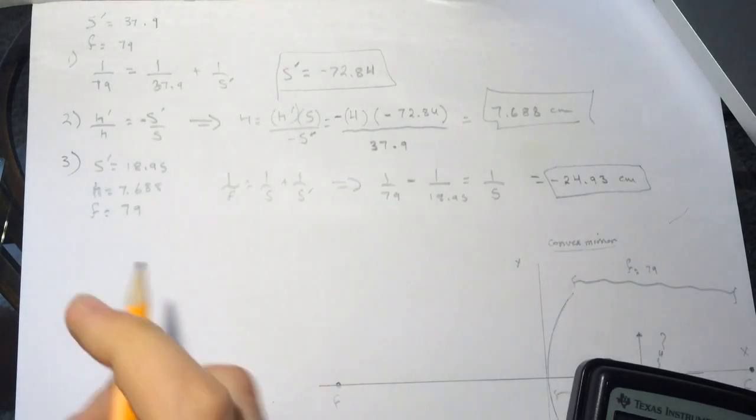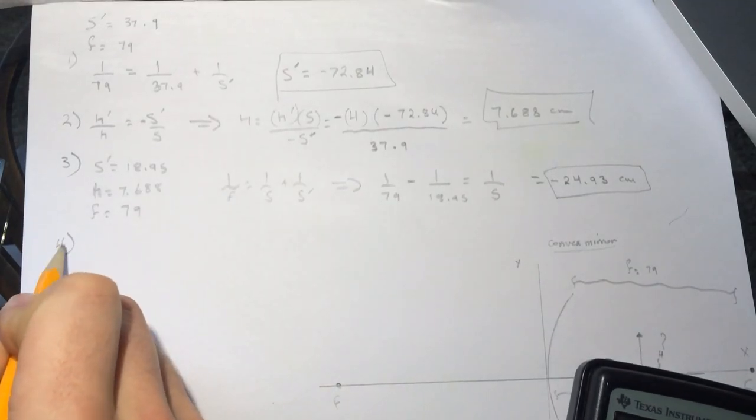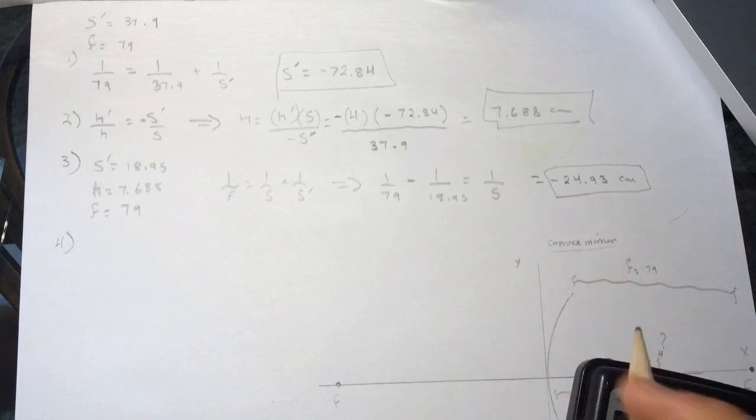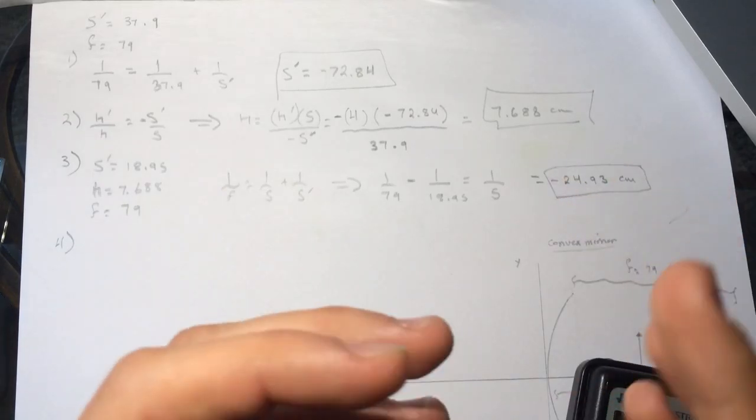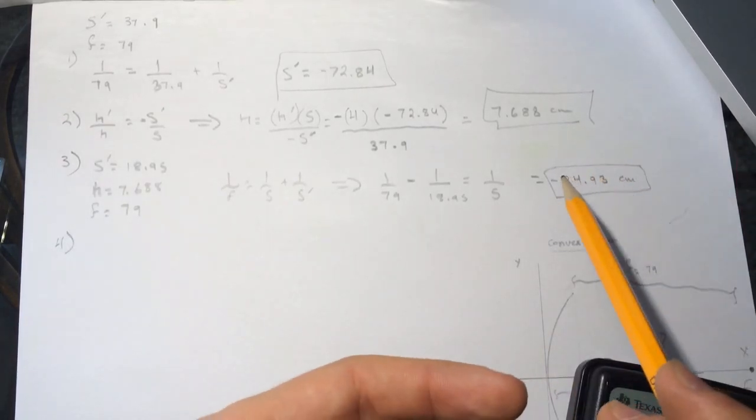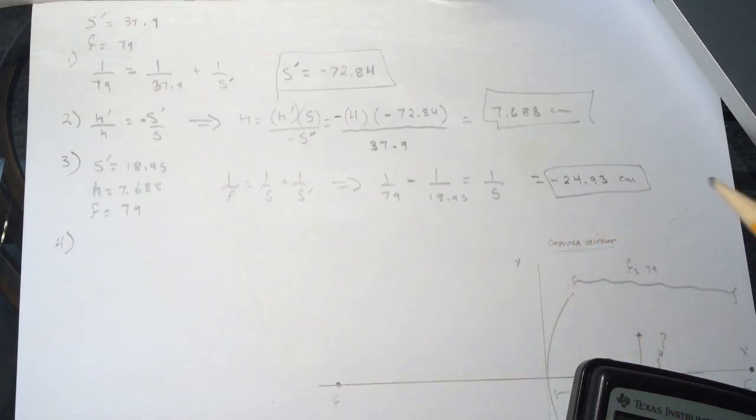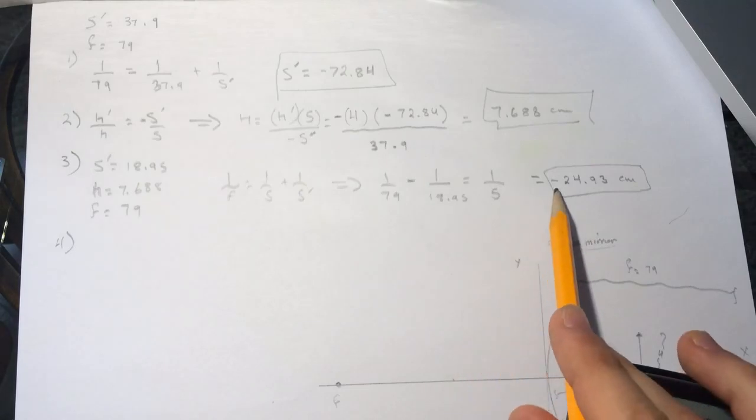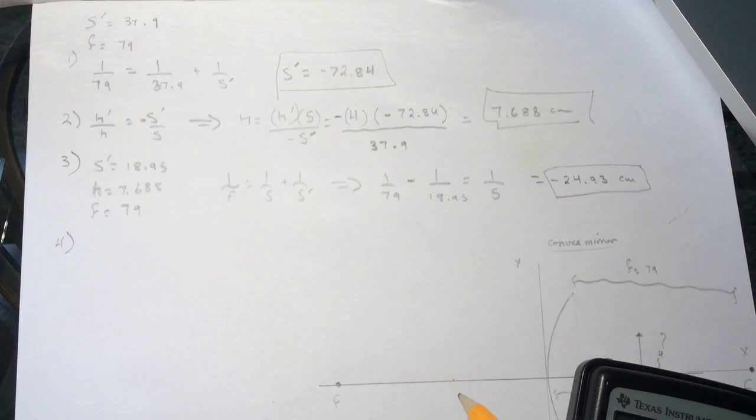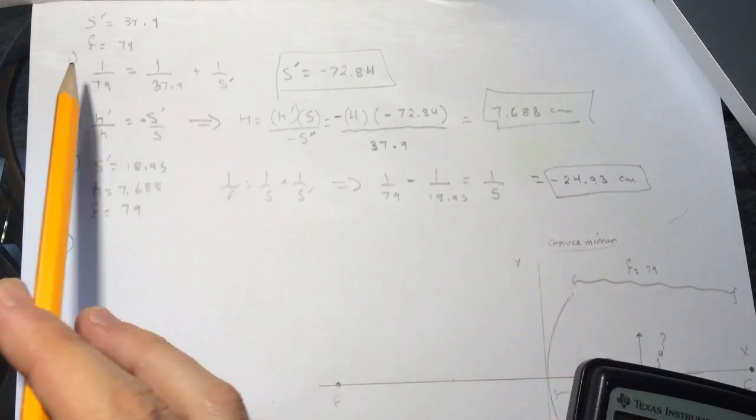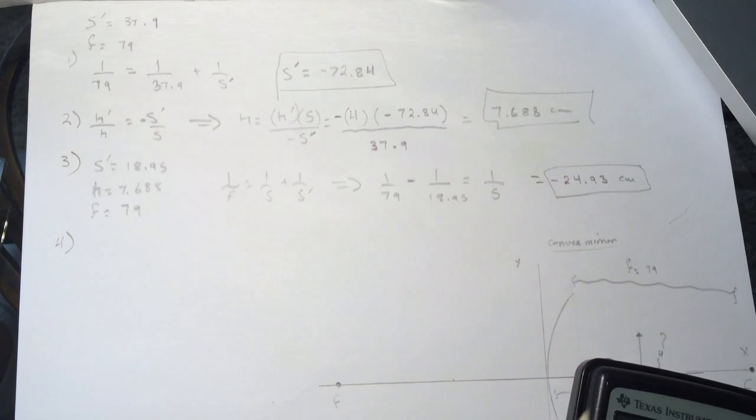So 79 minus 18.95 like this. So it's negative 24.93 cm. All right. So here we're looking at the exact position of it. So here they gave us that's negative 24.93. So negative 24.93. And it's negative, it's just the position of it. Maybe you're going to wonder why the focal point here is not negative, but I'm just using the exact position of each one.